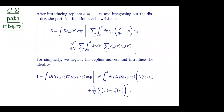Strictly speaking, this is going to give you the average Green's function and the average self-energy. If you want moments of these quantities — the average of G-squared or something like that — then you'll have to worry about the replicas. But at the moment I'm just computing the partition function, so I don't have to worry about it.